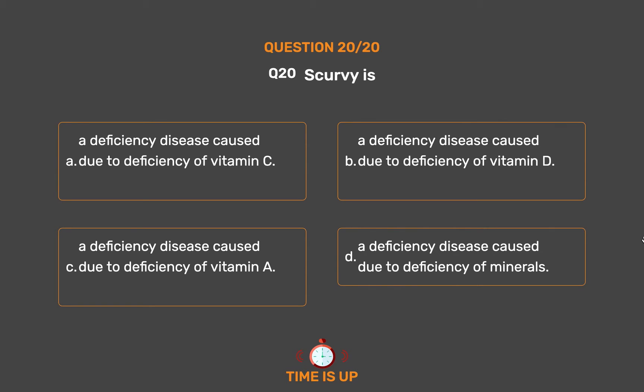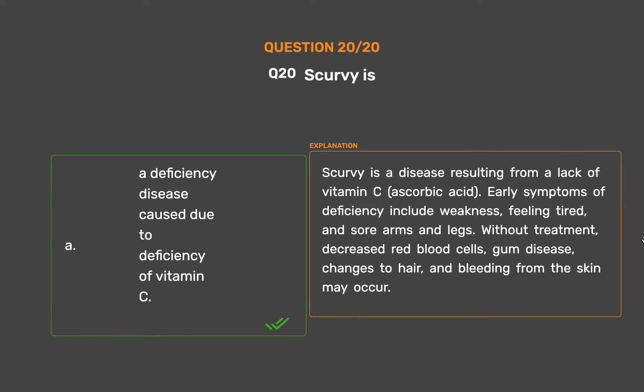The correct answer is Option A - A deficiency disease caused due to deficiency of vitamin C. Scurvy is a disease resulting from a lack of vitamin C (ascorbic acid). Early symptoms of deficiency include weakness, feeling tired, and sore arms and legs. Without treatment, decreased red blood cells, gum disease, changes to hair, and bleeding from the skin may occur.